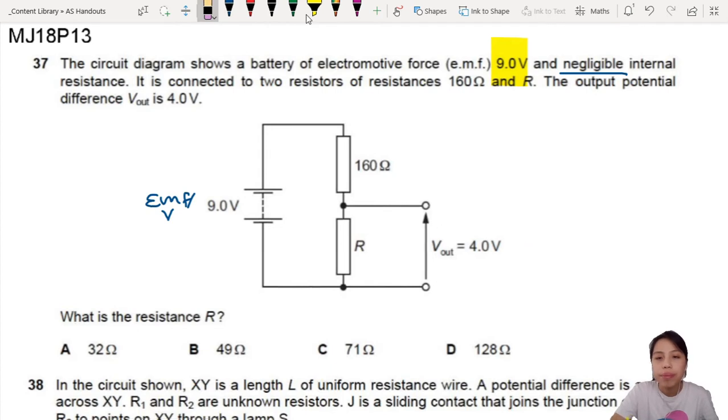So there's a potential drop of 4 volts - potential or voltage drop, AKA potential difference. 4 volts. What is the resistance of R?